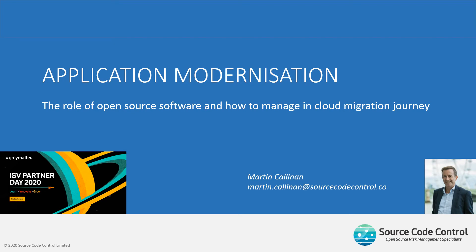Welcome, everybody. My name is Martin Callinan from Source Code Control. We are sponsors of the Grey Matter ISV Partner Day. As a company, we work with organisations to help them manage open source software when used in software development — things like IP and licensing issues, but also security vulnerability management.